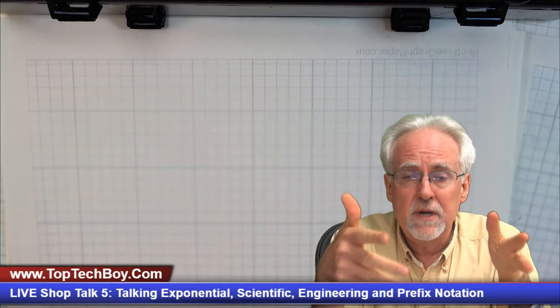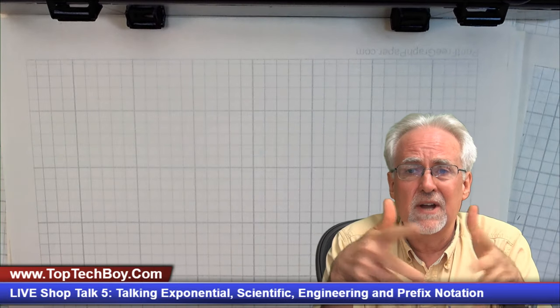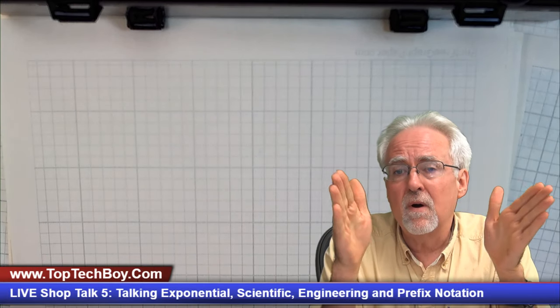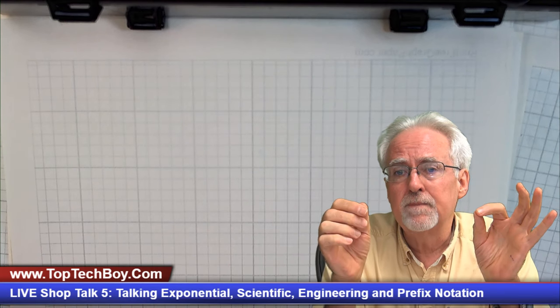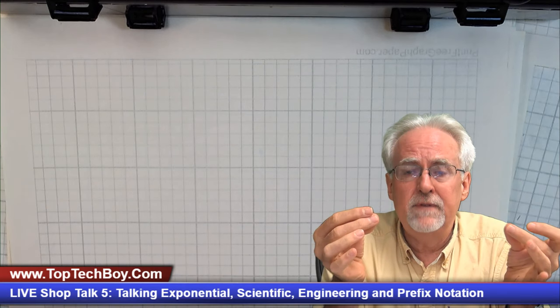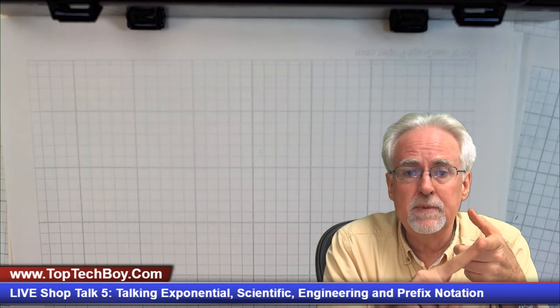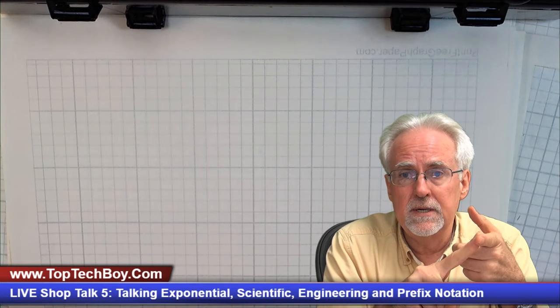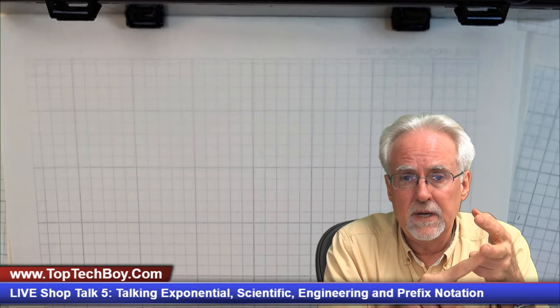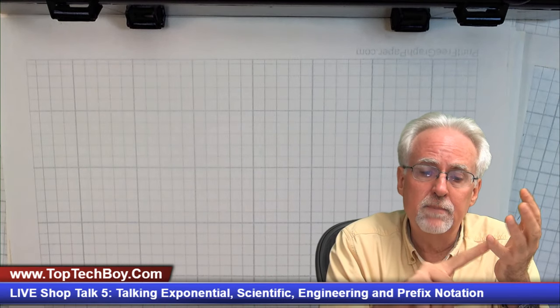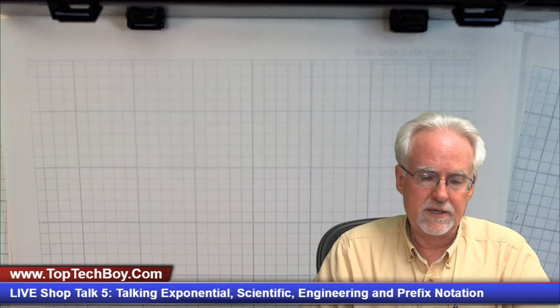I'm going to be talking about four different notations — kind of like ways of dealing with numbers. They're all very, very similar, but we have to understand the differences between them. What we're going to be looking at is exponential notation, scientific notation, engineering notation, and prefix notation.